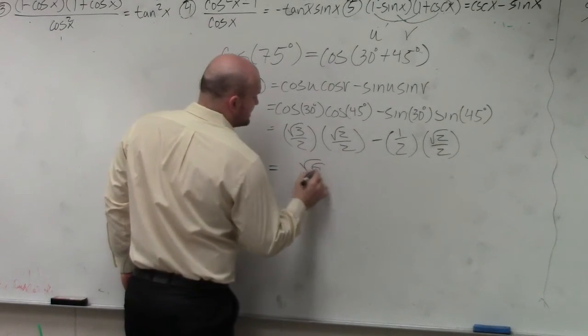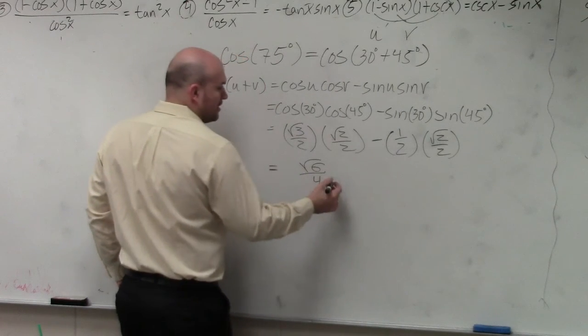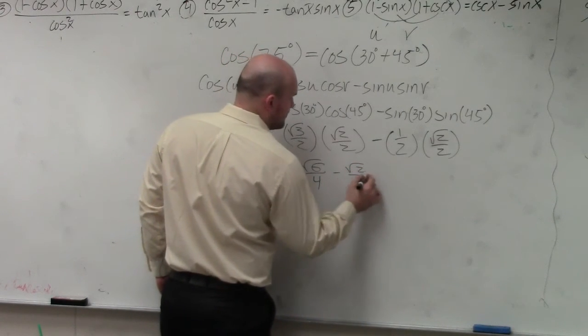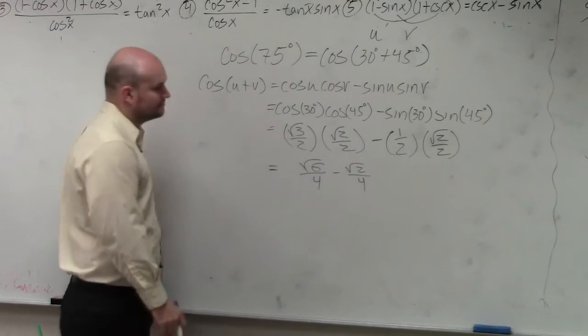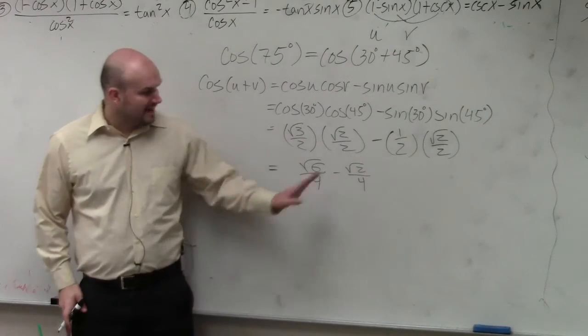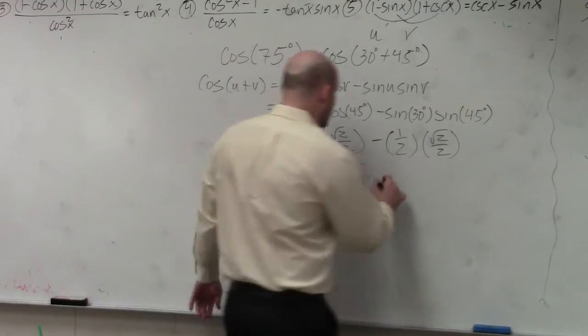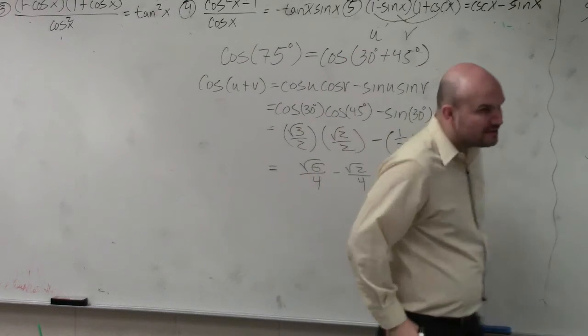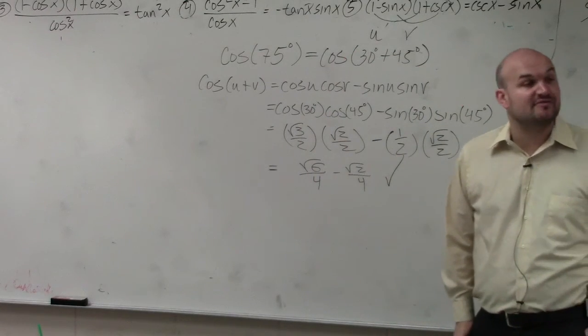So therefore, we have square root of 6 over 4 minus the square root of 2 over 4. OK? That is one answer. That's perfectly fine. However, they might ask you to simplify this even further.